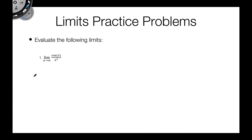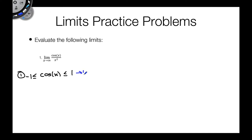The first thing we're going to do is we're going to start with a fact: cosine of x is always between negative one and one. This is just a fact — it's a property of the cosine function, it's just the way the graph is defined. The range of cosine is negative one to one.